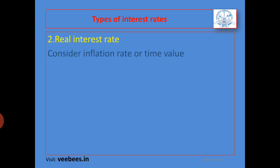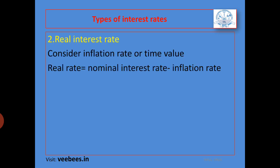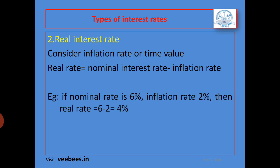The second one is the real interest rate. Real interest rate is the interest rate after considering the inflation rate or time value. Real interest rate = nominal interest rate − inflation rate. For example, if the nominal rate is 6% and the inflation rate is 2%, then the real rate = 6% − 2% = 4%. So, real rate = nominal rate − inflation rate.